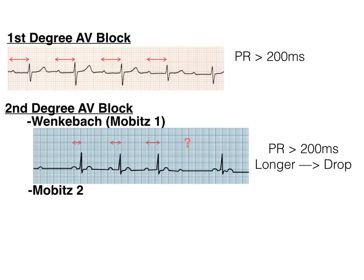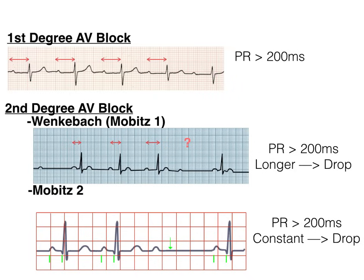Another way to remember this is that Wenckebach gives you warning — just think of those Ws. Wenckebach gives you warning. The PR intervals are gradually lengthening and they're warning you that a beat is about to drop. That's Wenckebach, also known as Mobitz type 1. Now, Mobitz type 2 is a little bit different. In a Mobitz type 2, the PR interval is lengthened and it stays lengthened — it's not getting progressively longer. The intervals stay elongated, but then a beat is dropped.